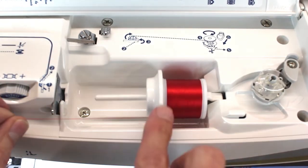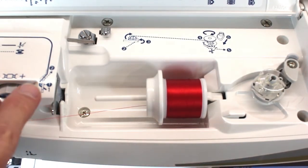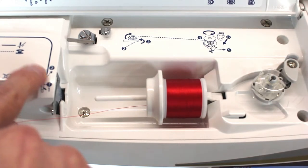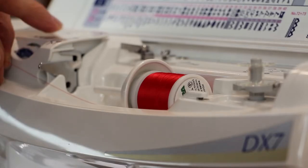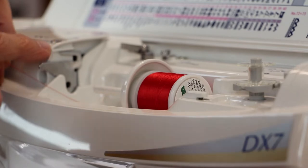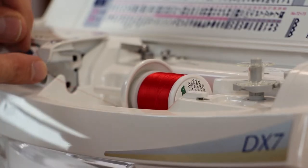Next is we're going to pull our thread off the spool and through step number one. The steps for winding a bobbin or the dotted line as indicated on the top of our machine. So number one is this little metal tab right here. We're going to come underneath and pull to the back.